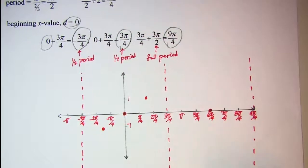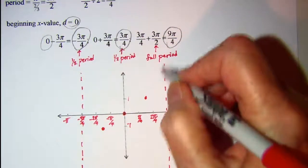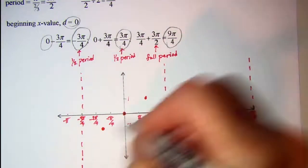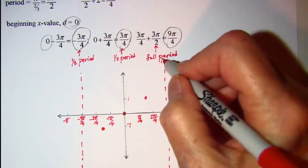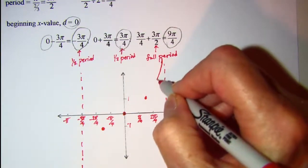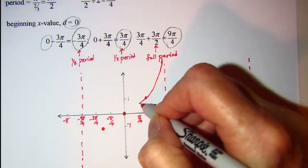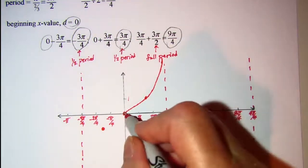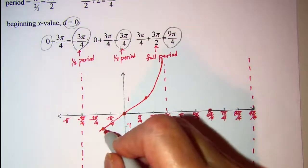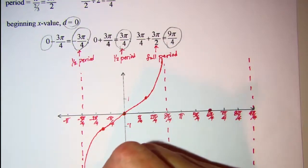So my curve, I'm going to go from right to left, goes from positive infinity through my 1 through my 0 through my negative 1 and then down to negative infinity.